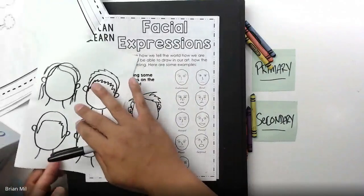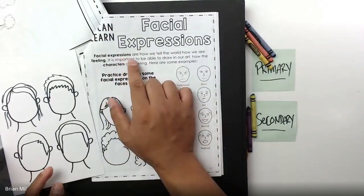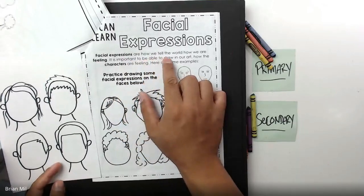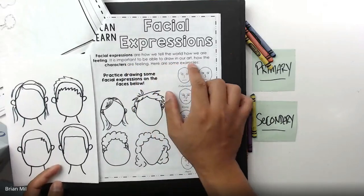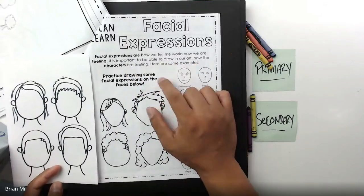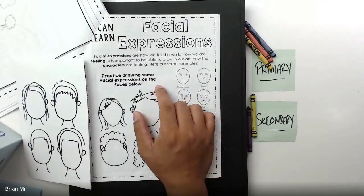What this worksheet says is: facial expressions are how we tell the world how we are feeling. It is important to be able to draw in our art how the characters are feeling. Here are some examples.